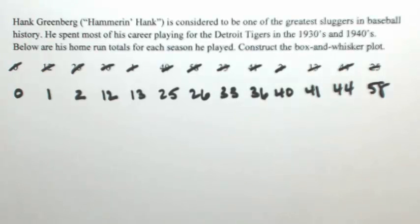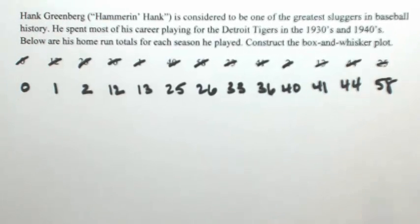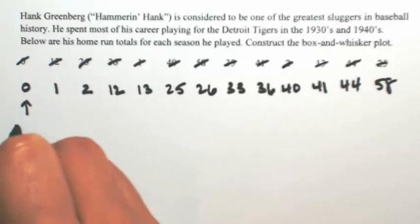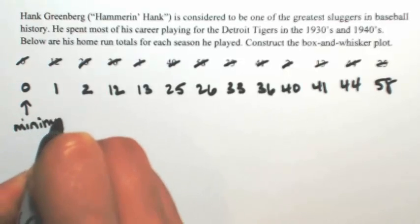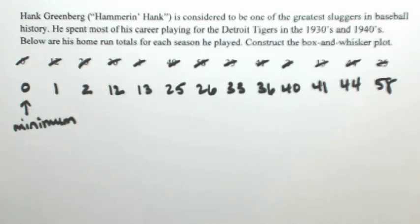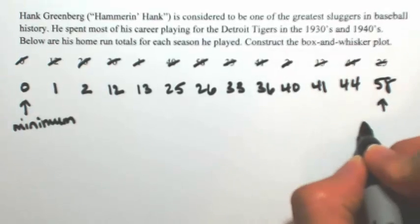So now that everything is in order, we can identify two parts of the box and whisker plot. The first part, which is 0, that's called the minimum value. That's the smallest one. And then 58 is called the maximum value.